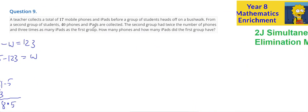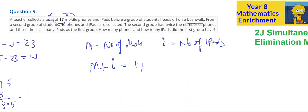A teacher collects 17 mobile phones and iPads before the students head off to Bushwalk. So, if M equals the number of mobile phones, and I equals the number of iPads, therefore, M plus I equals 17, because if I had the number of mobiles and the number of iPads, I get the total of 17.